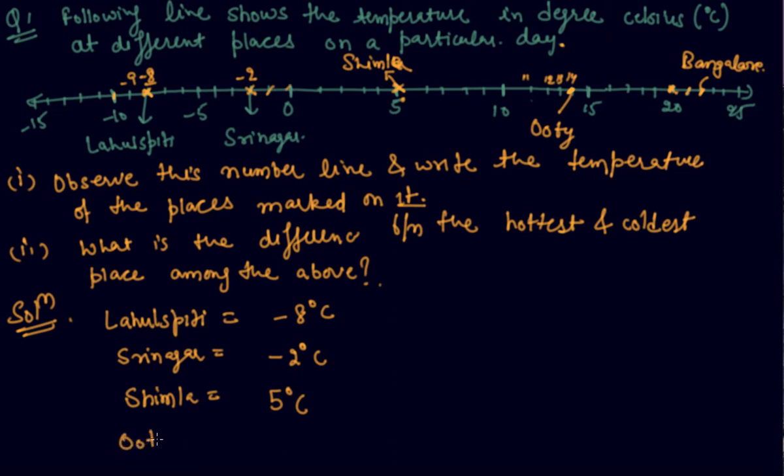And what about Ooty? It is 14 degrees Celsius. And what about Bangalore? It is 22 degrees Celsius. Now comes the second part of the question.